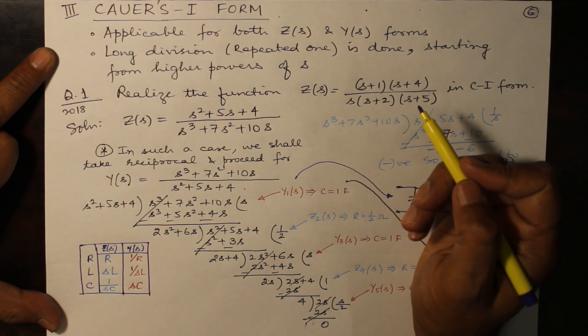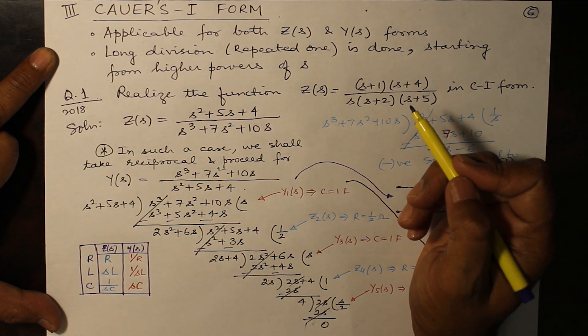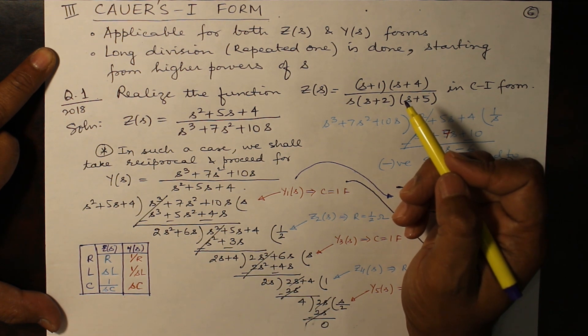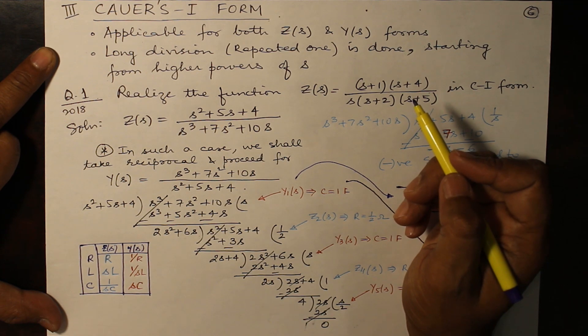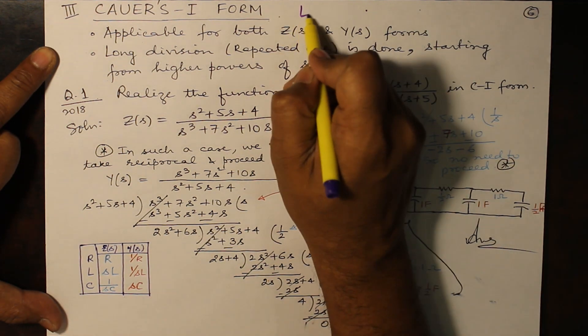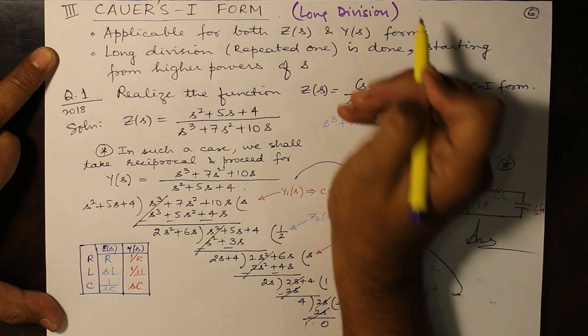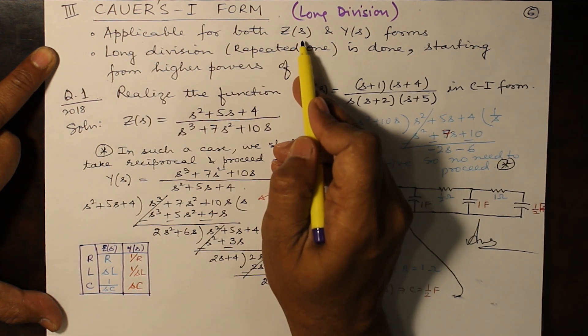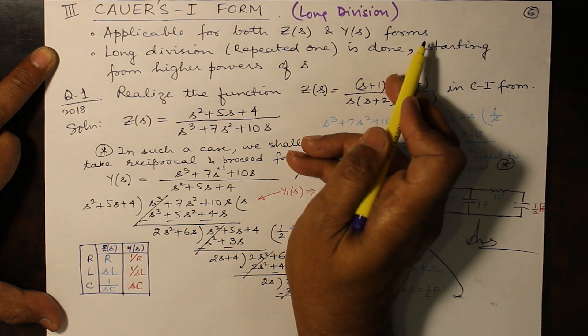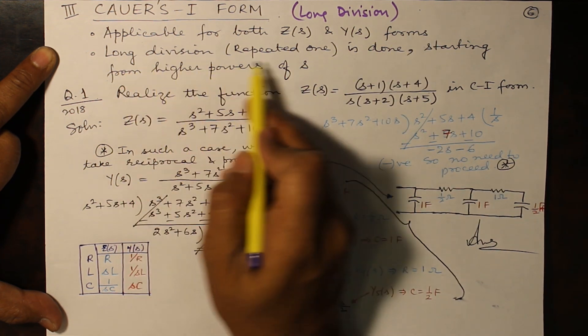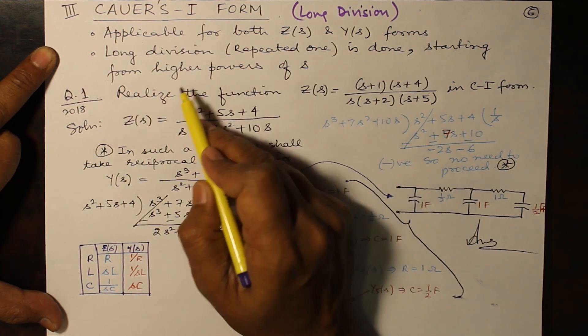In this video we'll be doing both the Cauer's form. As has been told to you earlier, Cauer's form is the ladder form and here we perform long division. This is applicable both for impedance function and admittance function forms. Long division is carried out starting from higher powers of s.